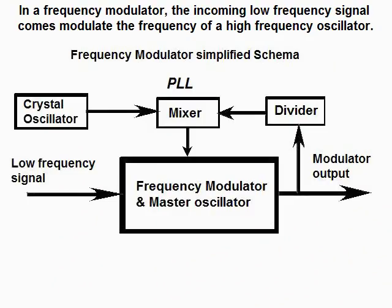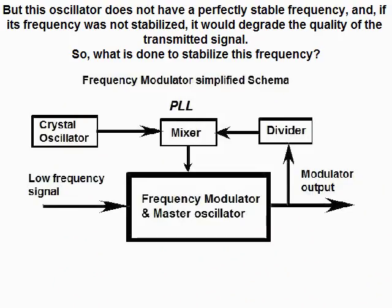In a frequency modulator, the incoming low-frequency signal comes to modulate the frequency of a high-frequency oscillator. But this oscillator does not have a perfectly stable frequency, and if its frequency was not stabilized, it would degrade the quality of the transmitted signal.